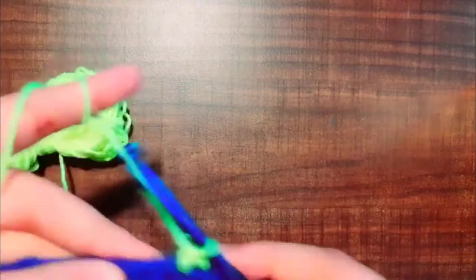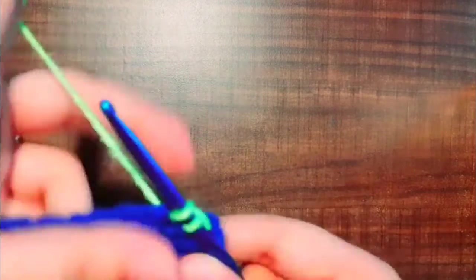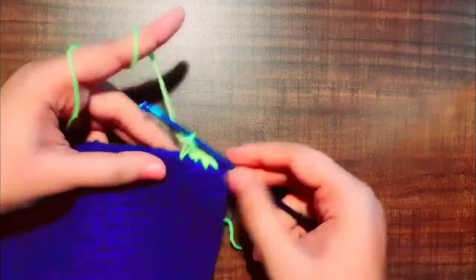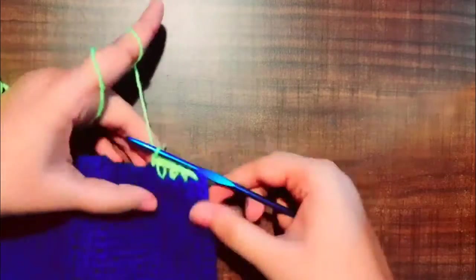Now I'm using a fluorescent green color yarn and I'm going to make a border using normal single crochet and a border of this color. So let's make it.